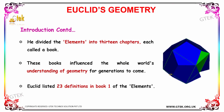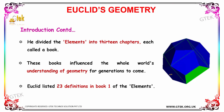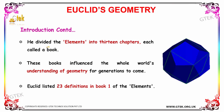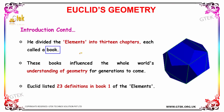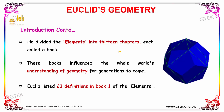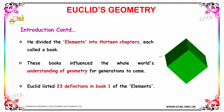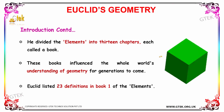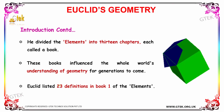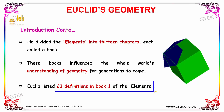Euclid divided the Elements into 13 chapters, each called a book. These books influenced the whole world's understanding of geometry for generations to come. Apart from this, Euclid listed 23 definitions in Book 1 of the Elements.